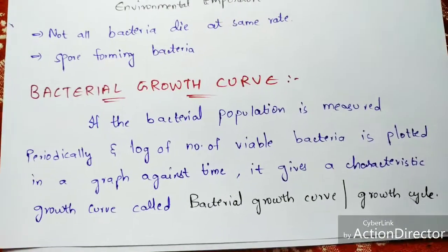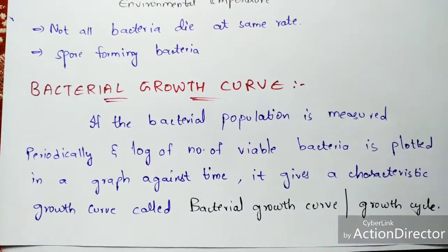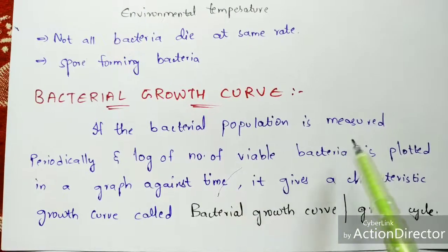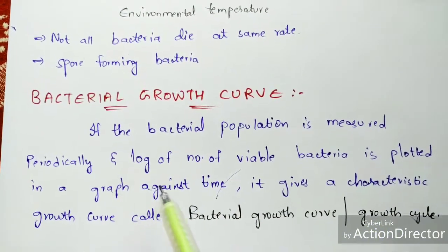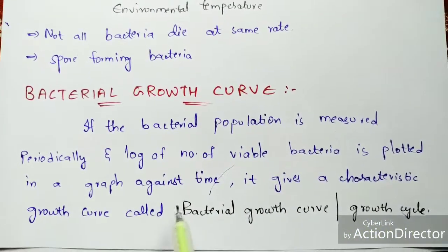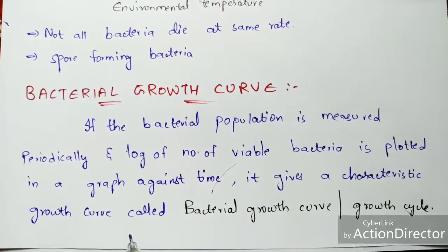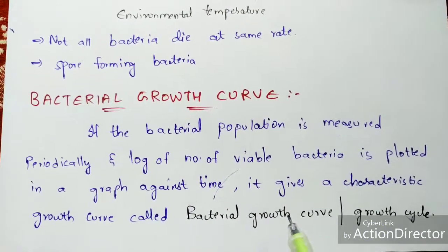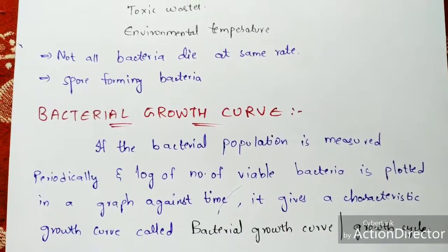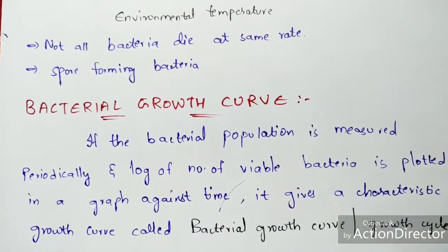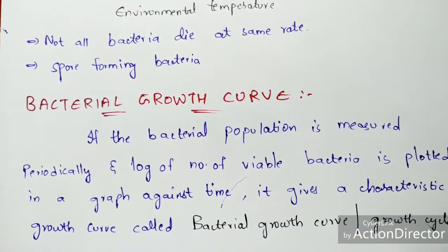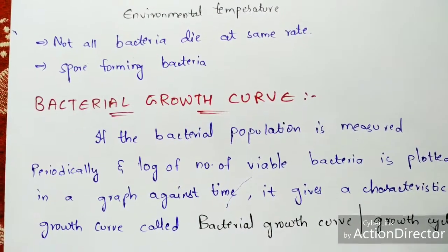The proper definition of the bacterial growth curve: if the bacterial population is measured periodically and the log of the number of viable bacteria is plotted on a graph against time, it gives a characteristic curve called the bacterial growth curve, also known as the growth cycle. This curve is based on the four phases: lag phase, log phase, stationary phase, and death phase.